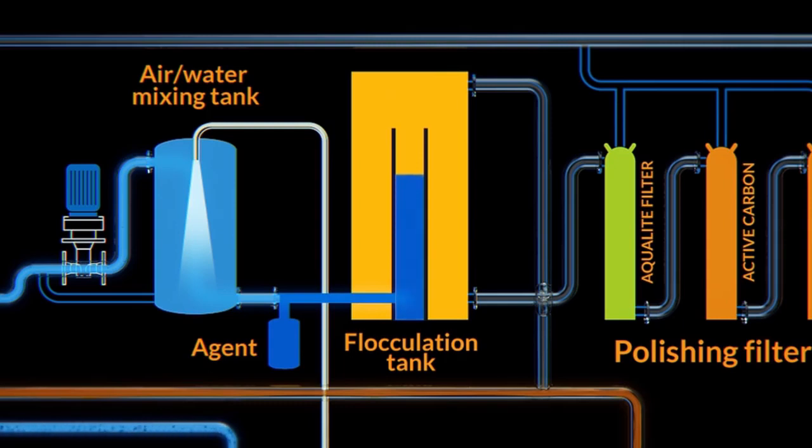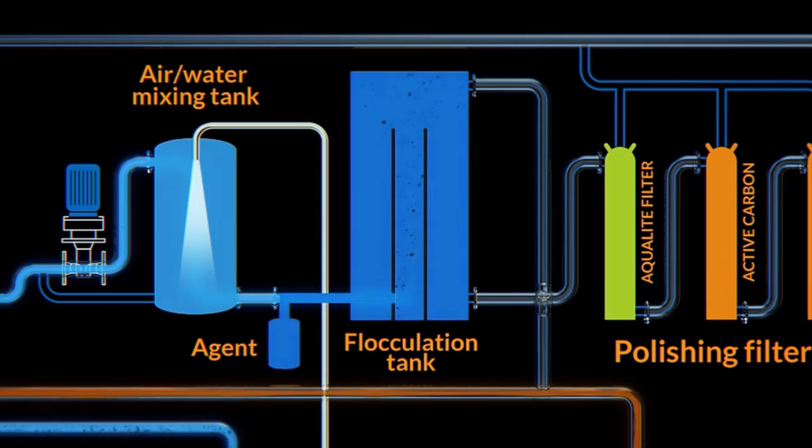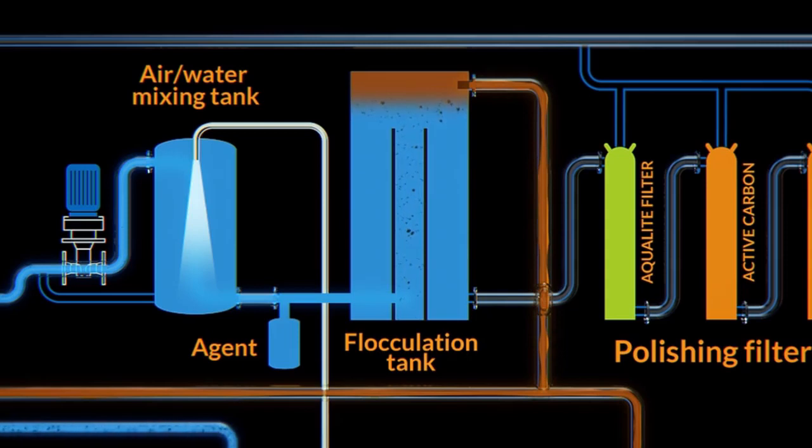When the aerated bilge water reaches the flocculation tank, the flocculation process starts. Due to all the air in the water, the flocks will float through a pipe in the centre to the top of the tank, where they are skimmed off and transferred to the sludge tank. Flocks mixed with sludge can then be incinerated.